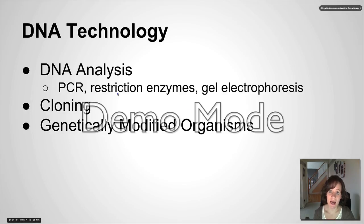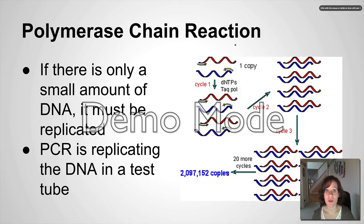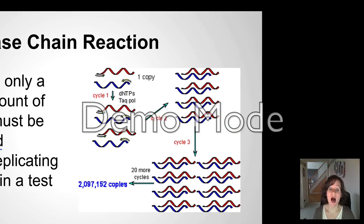If we want to look at somebody's DNA or compare somebody's DNA to somebody else's, how do we go about doing that? The first step is something called polymerase chain reaction, or PCR. The idea behind this is whenever we start with somebody's DNA, we generally don't have a lot of it. We're taking it from a crime scene or from a small blood sample, so we need to amplify it or make more copies. PCR is simply the process of replicating DNA in a test tube.